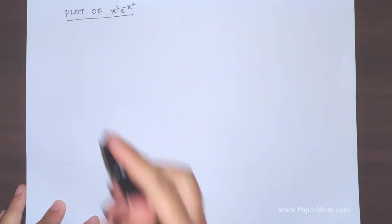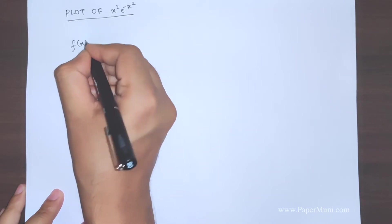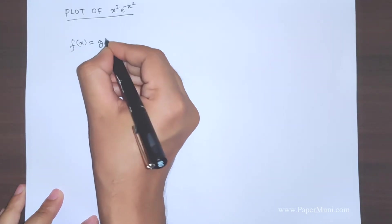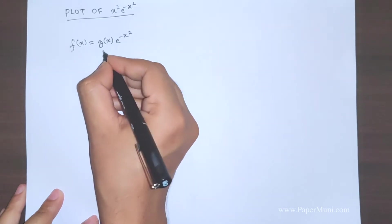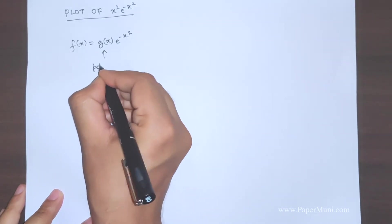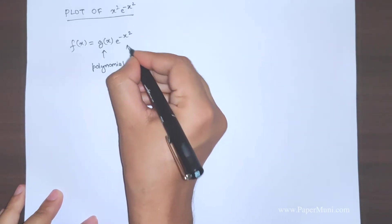Now in this kind of graphs you always remember that if you have been given a function which is equal to the function multiplied by exponential function. Now this can be a polynomial and this is the exponential function.